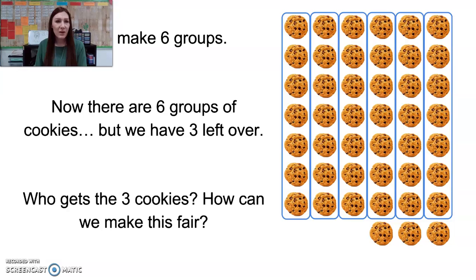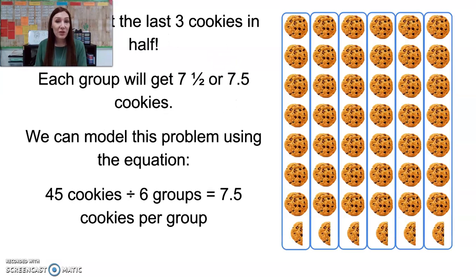Who gets the three cookies? How can we make this fair? We can split the last three cookies in half, so each group will get seven and a half cookies. We can model this problem using the equation: 45 cookies divided by six groups equals seven and a half cookies per group.